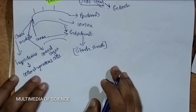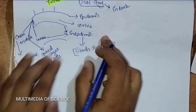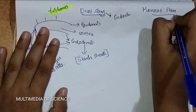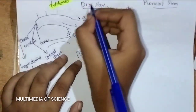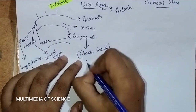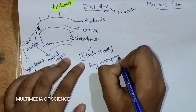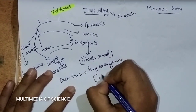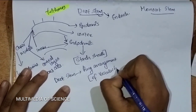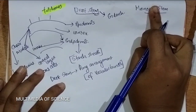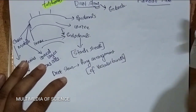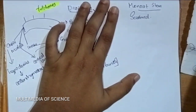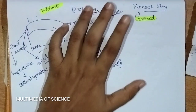Next is about the vascular bundle arrangement — very important in the syllabus. The main difference between Dicot stem and Monocot stem is the arrangement of vascular bundles. In Dicot stem, the arrangement of vascular bundles is in a ring arrangement. But in the case of Monocot stem, the vascular bundles are all scattered — scattered vascular bundles are present in Monocot stem.